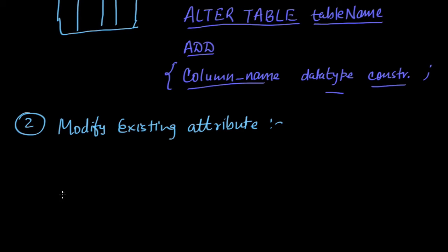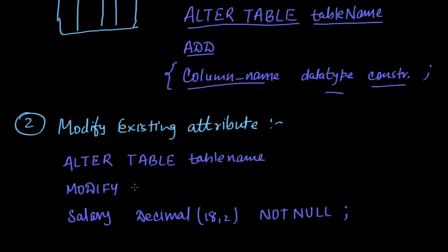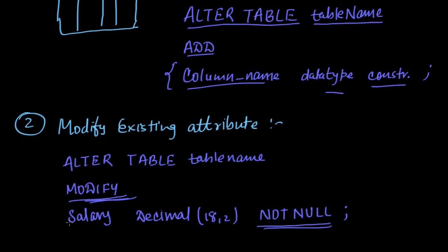So the command will be: ALTER TABLE employee MODIFY salary data_type NOT NULL. In case of modification of an existing attribute we use the keyword MODIFY. This salary attribute is already created, and by running this command the schema property will be modified so that salary cannot be null.